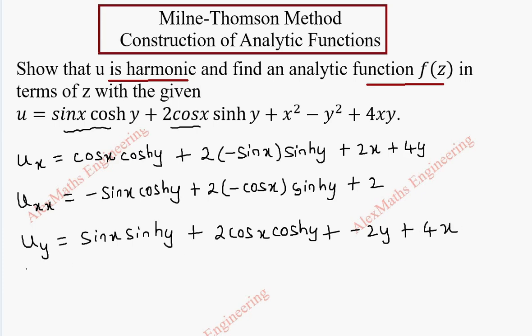When coming to u_yy, this is a constant sin x and sinh y is cosh y plus 2 cos x is a constant, cosh y is sinh y and this becomes minus 2 and 4x becomes 0.